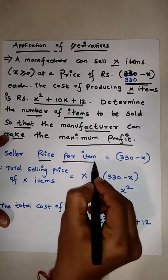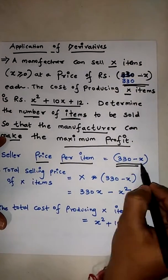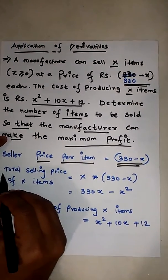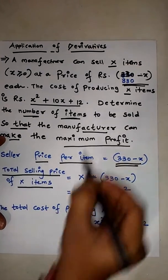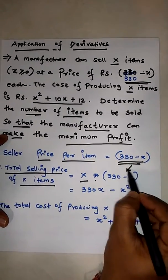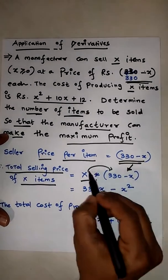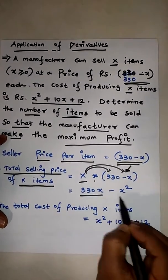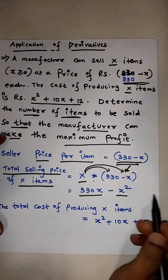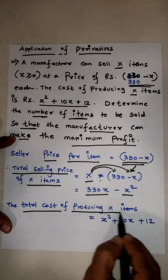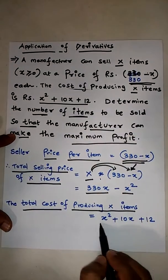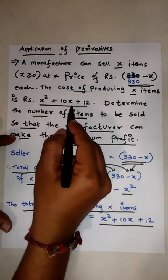First, the price per item is 330 minus x, so the total selling price of x items is equal to x into 330 minus x. Multiplying x, we get 330x minus x squared. Second, the total cost of producing the x items is x squared plus 10x plus 12, which is already given.